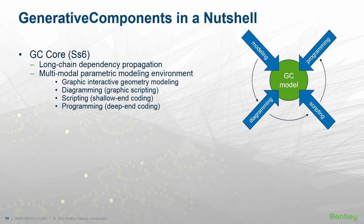The geometry is generated using MicroStation and Ecosim Building Designer technology as applicable. On these foundations, there rest four ways of interacting with the GC model: graphic interactive geometry modeling through view windows into DGN models; diagramming or graphic scripting through a node-types palette and the GC graph; scripting or shallow-end coding through expressions and coding in input properties, expression nodes, and function definitions via the built-in GC script editor; and programming or deep-end coding through a development environment like C# Visual Studio Express using the sample C# project included in every GC installation.